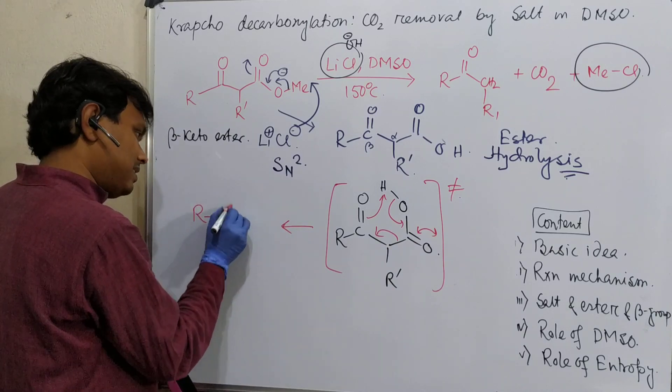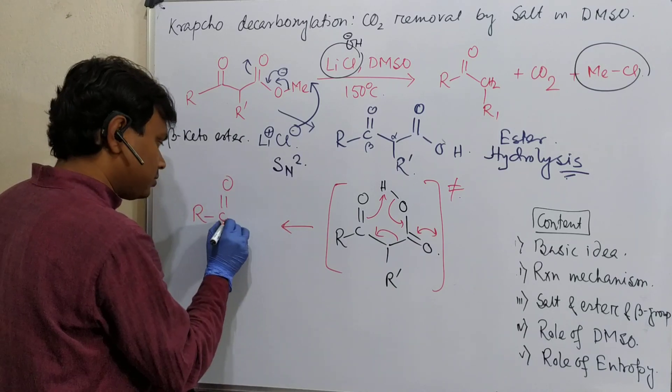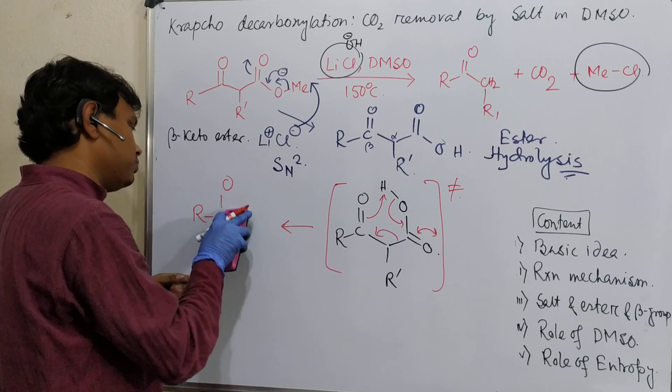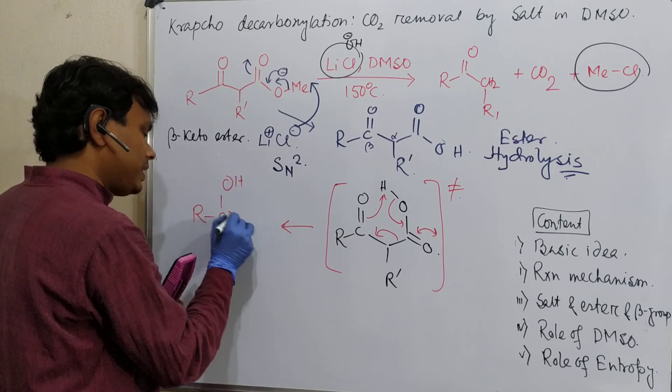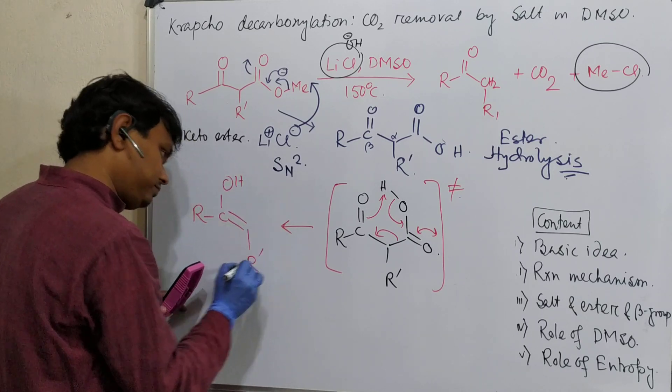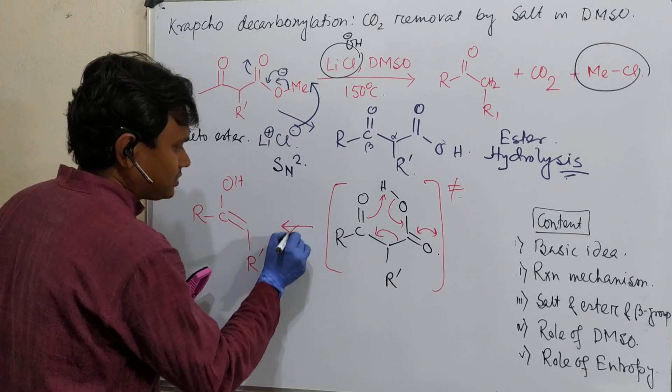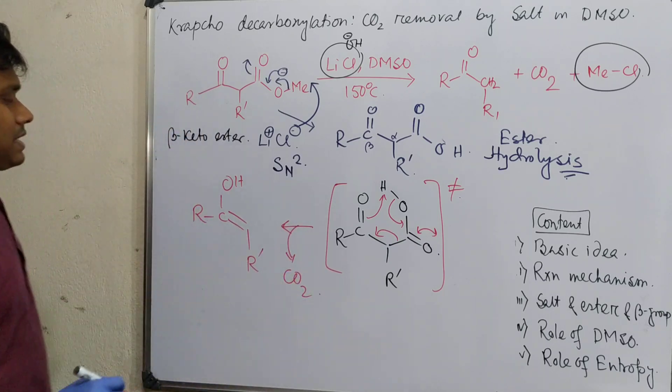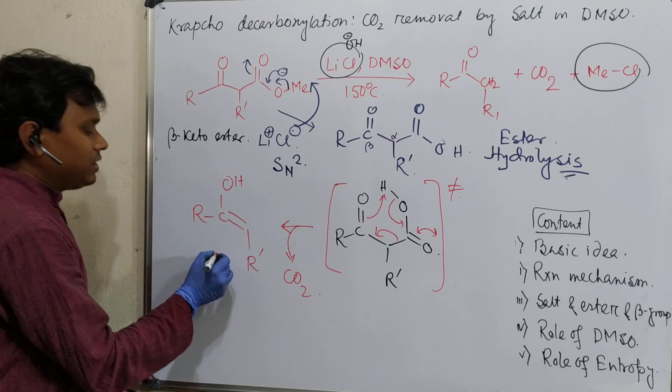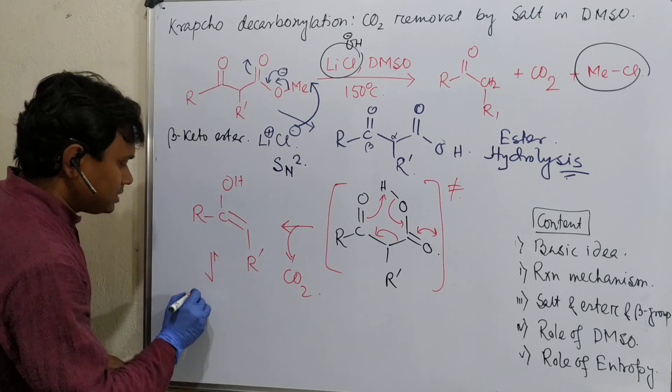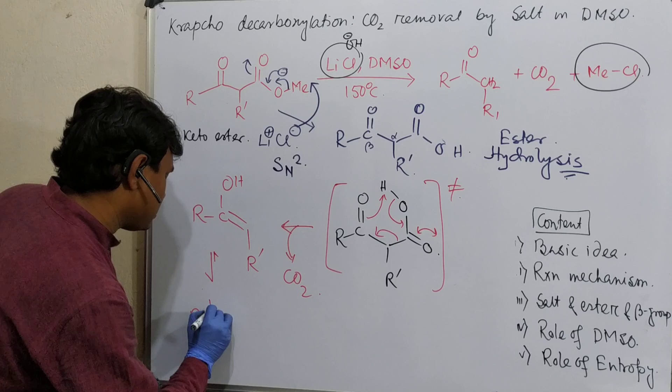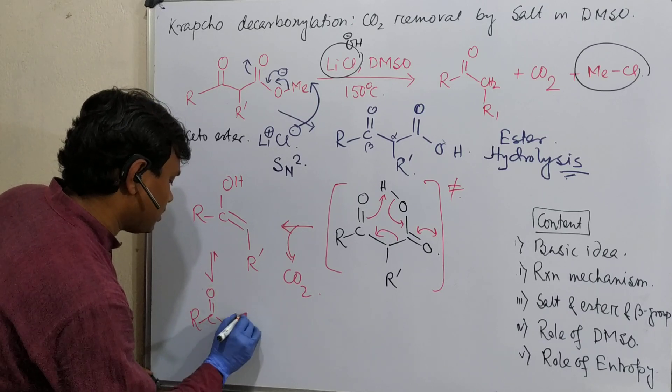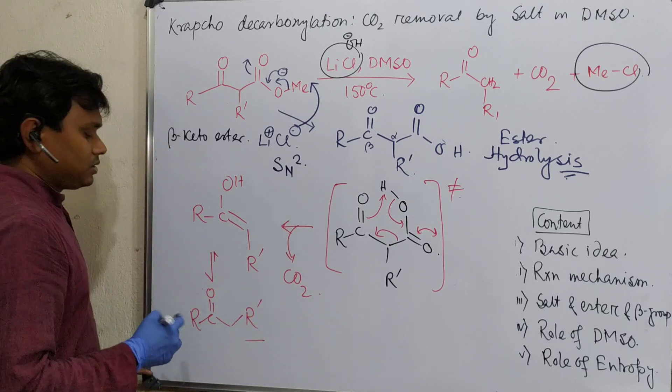So what does it produce? It produces R C-OH double bond R' plus carbon dioxide. So here carbon dioxide is eliminated. And it instantly - see, this is an enol - so instantly tautomerizes into ketone: R C=O R'. So this is the product.